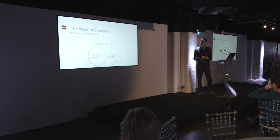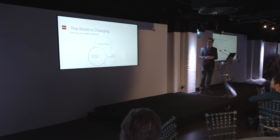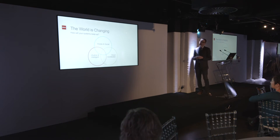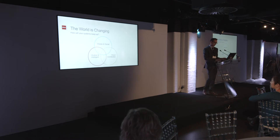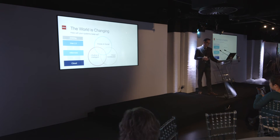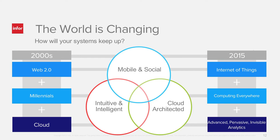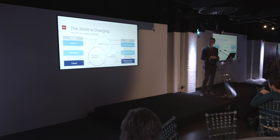Because the world is changing — how will your systems keep up? Mobile and social, we're all connected. We want things to be intuitive and intelligent; we don't need to be chasing information or digging for it. Cloud architecture is really important — the cloud is here now. Looking into 2015, there's this interesting concept of the Internet of Things — everything available to us, much of it in the cloud, computing everywhere, and advanced pervasive invisible analytics. I don't want to ask for information — I want it to come to me. Sun Systems is pushing forward along with iPoS to give you that best experience.